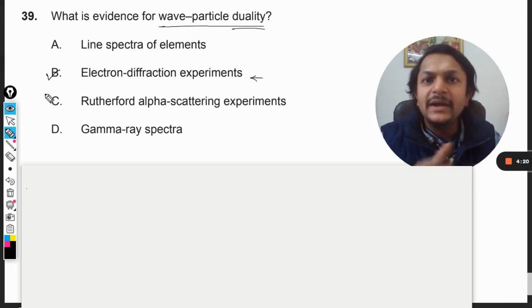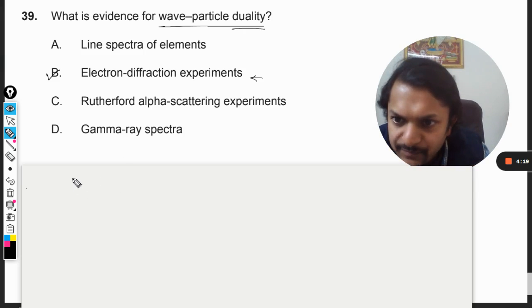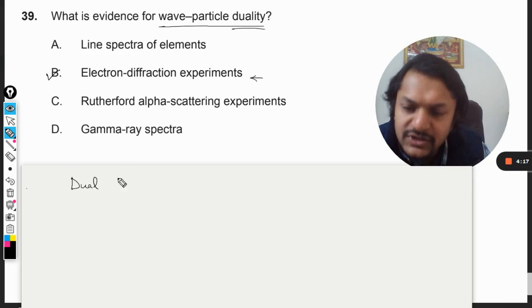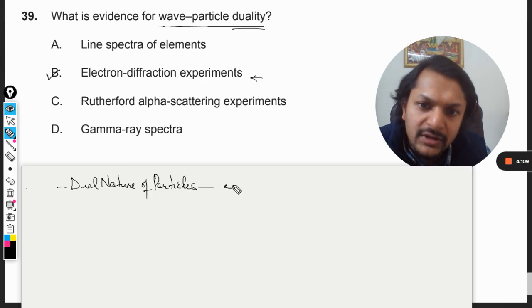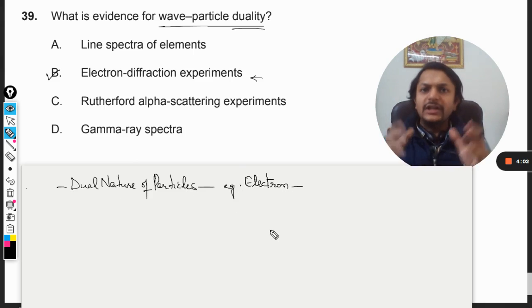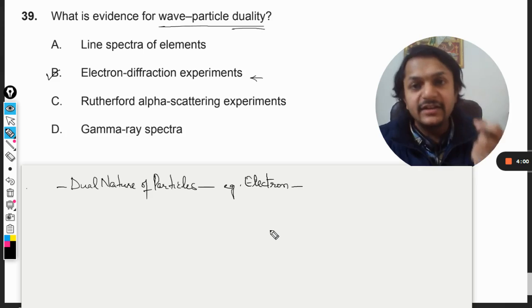But what is this? According to the theory of wave-particle duality, it comes in terms of dual nature of particles, for example, the electron. Now from our basic knowledge, we consider electron to be a